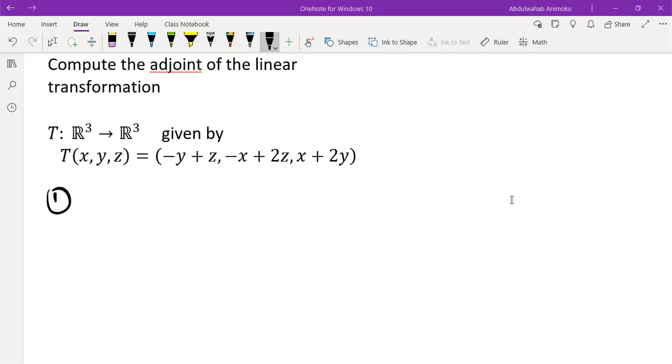So let's just get started. The first thing is we need to find the adjoint of this transformation. We need to find the matrix of transformation related to standard basis. So we need to find matrix of T relative to standard basis for R cubed.